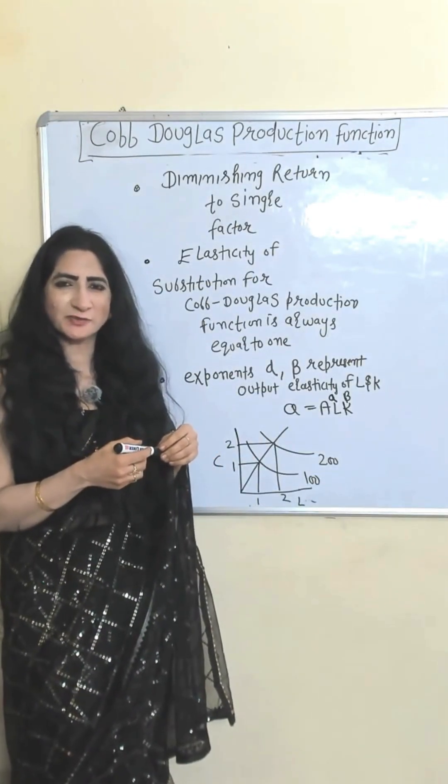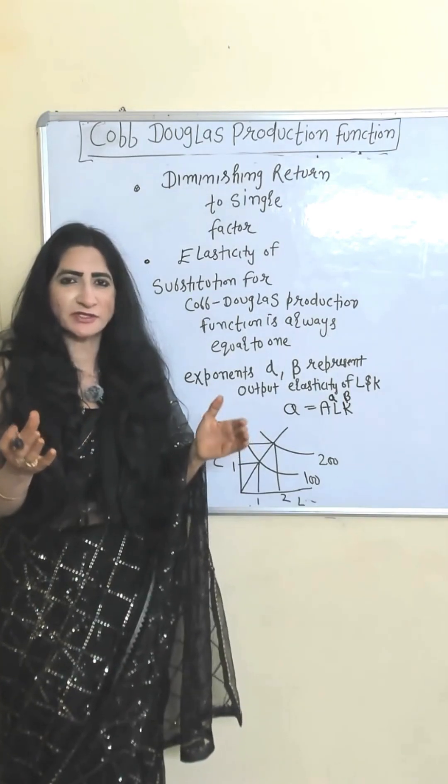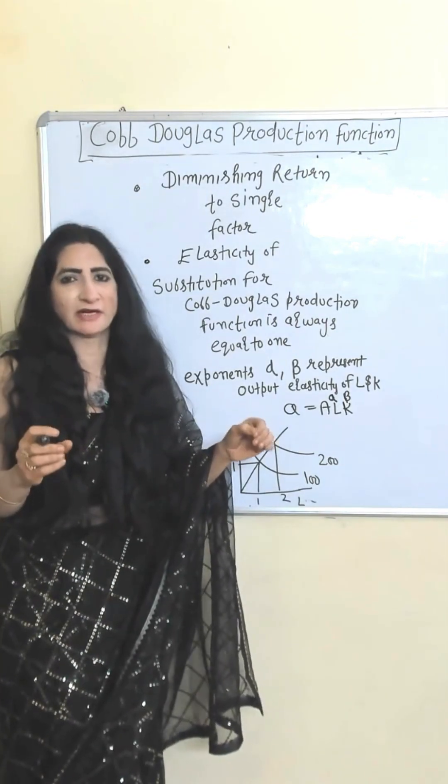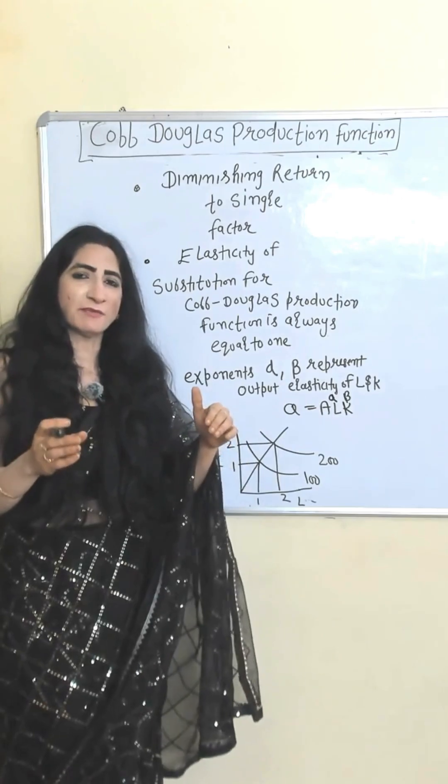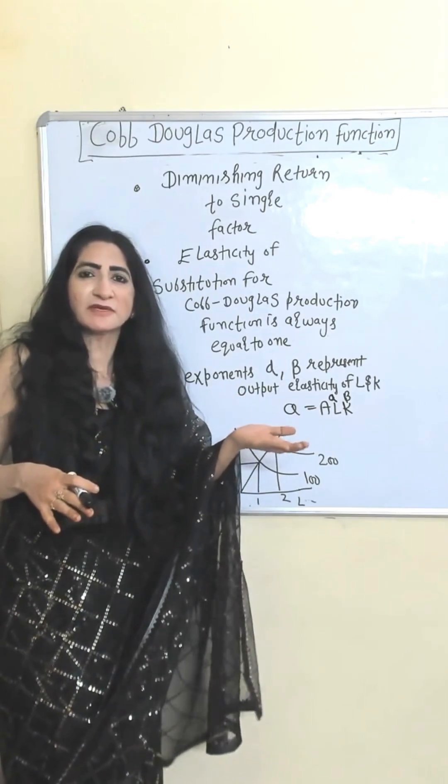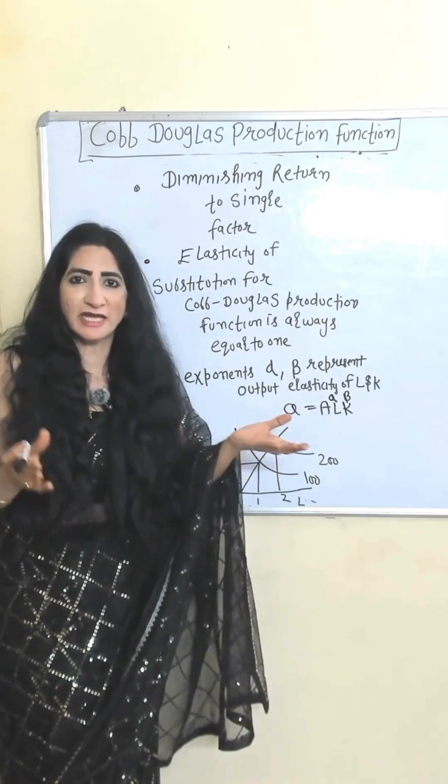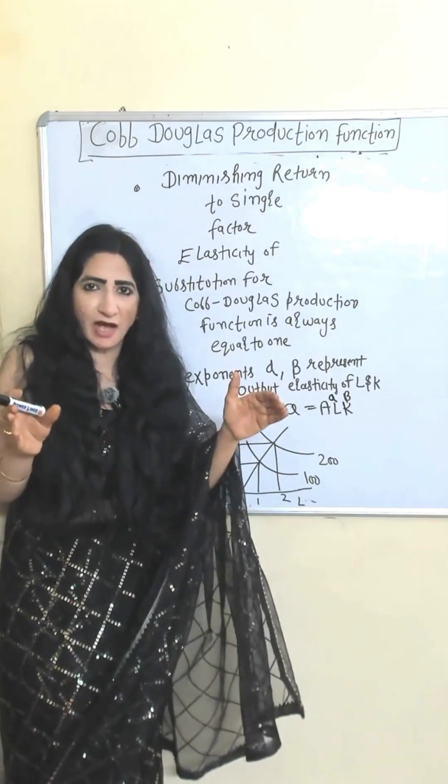Key properties of Cobb-Douglas production function. No doubt overall Cobb-Douglas production function give constant return to scale. But give diminishing return to single factor. For example, you only change labor keep capital constant. The labor will start giving diminishing returns. That's why both factors are necessary for receiving constant output.